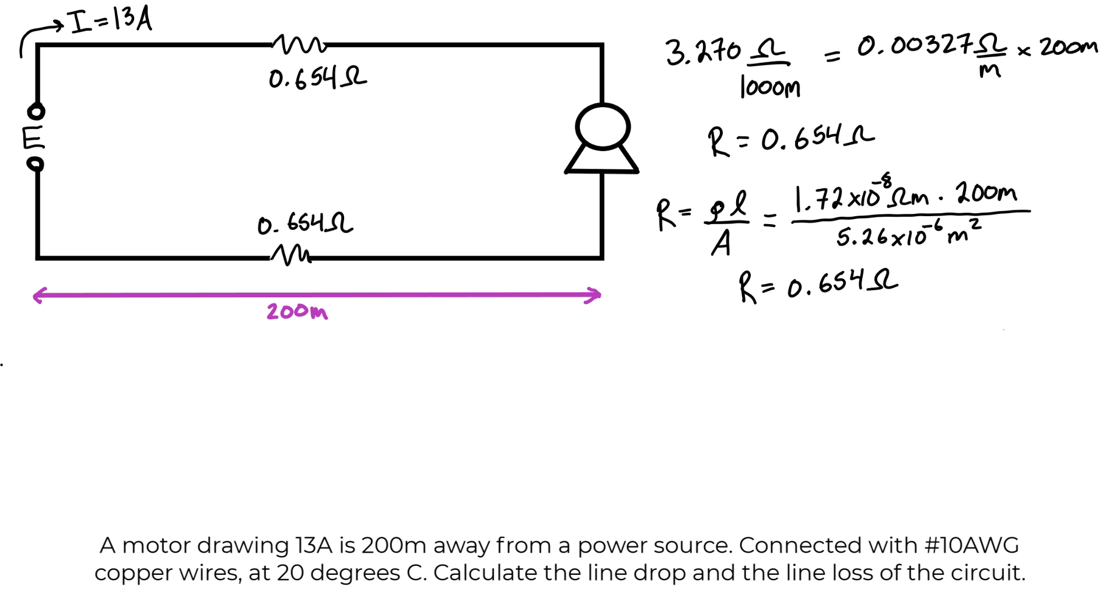Up until this point we've just found the resistance of the conductors. Now the first part of the question was asking us to find the line drop. Line drop refers to voltage—it's actually just asking the voltage drop of the line or of the conductor. So we're just going to apply Ohm's law, V equals IR. We have the current, it was given to us in the problem—it's 13 amps—and the resistance we found for each line is 0.654 ohms, and that's just 8.5 volts.